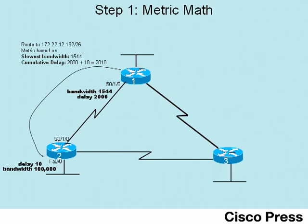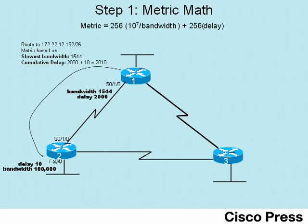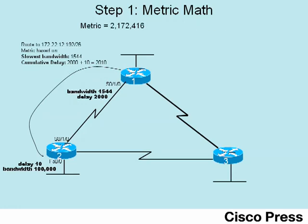The specifics of the metric calculation may not matter for the CCNA exam, but it's a good place to show the formula. EIGRP by default only considers bandwidth and delay, and here's what the formula reduces to. For the best route — directly from R1 to R2 — we plug in the slowest bandwidth of 1544 and cumulative delay of 2010. Working through the math inside the parentheses, then multiplying by 256, and adding the terms together, you get 2,172,416. The number itself isn't all that interesting, but we'll see it appear in the show commands coming up next.